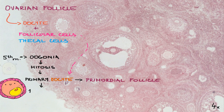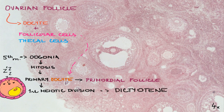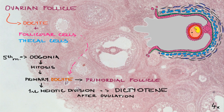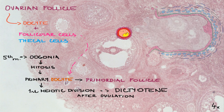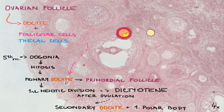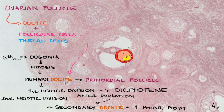The primary oocyte undergoes the prophase of meiosis and is arrested in a stage called dictyotene until ovulation takes place. After ovulation, the oocyte completes the first meiotic division and chromosomes are equally divided between two daughter cells: a secondary oocyte and a polar body. Afterwards, the secondary oocyte enters the second meiotic division, which rests in metaphase and is completed after fertilization, when it divides into a definitive oocyte and another polar body.